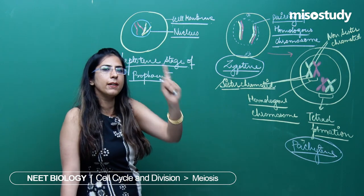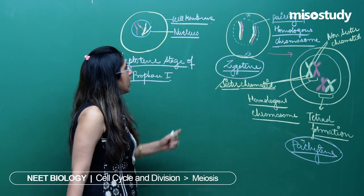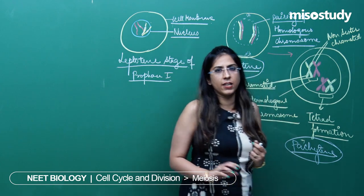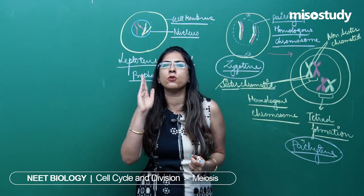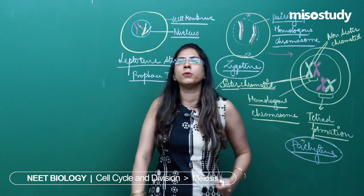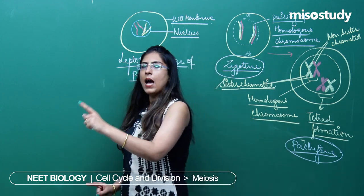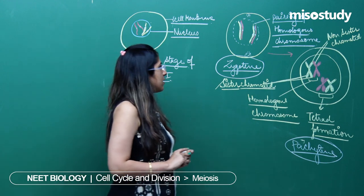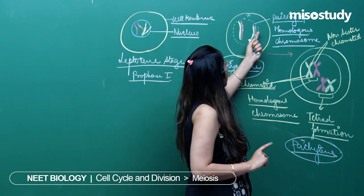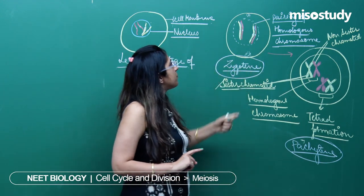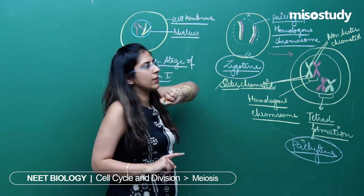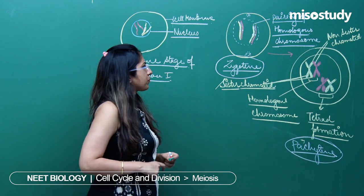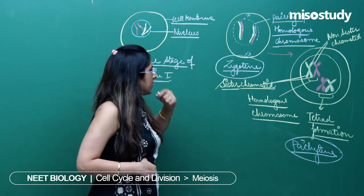The next stage is called the zygotene stage. The zygotene stage is that stage where pairing of the homologous chromosomes occurs — one chromosome arising from the mother and another from the father, maternal and paternal. After the pairing, there is formation of a blue-colored structure called the synaptonemal complex. This is the zygotene stage.